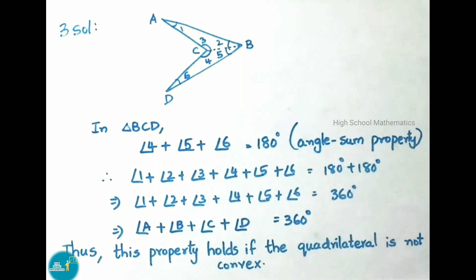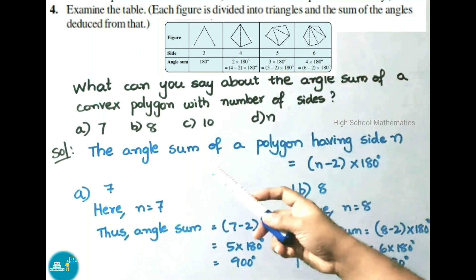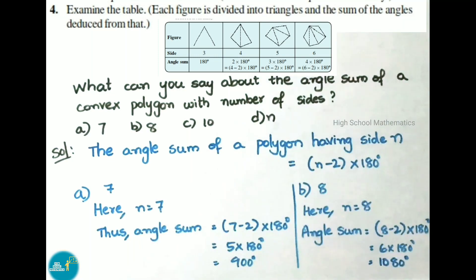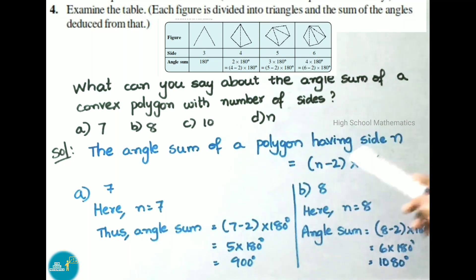Thus, this property holds even if the quadrilateral is not convex. Question number 4: each figure is divided into triangles and the sum of the angles is deduced from that. What is the angle sum of a convex polygon with number of sides A = 7, B = 8, C = 10, and D = N? The angle sum of a polygon having N sides equals (N − 2) × 180 degrees.